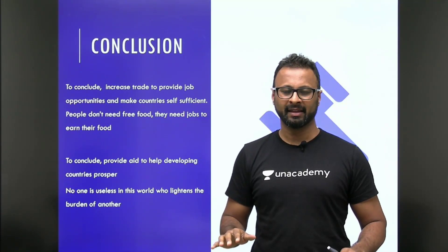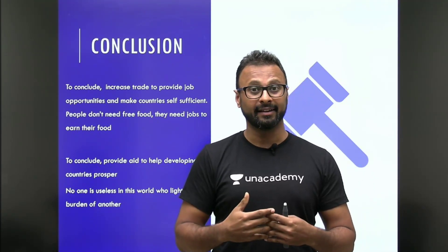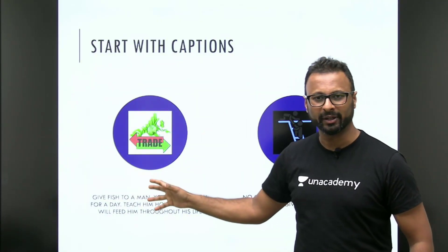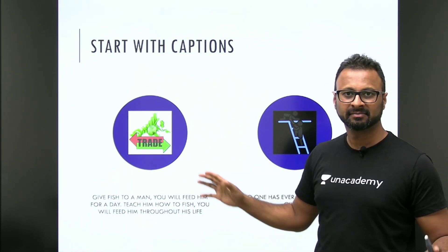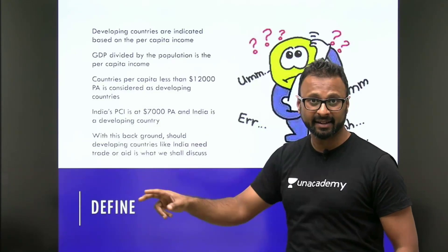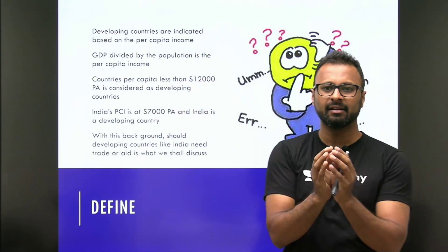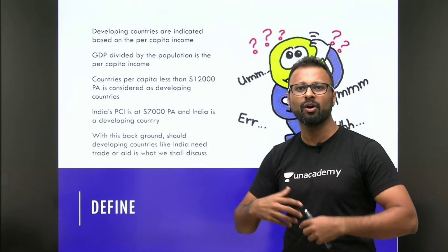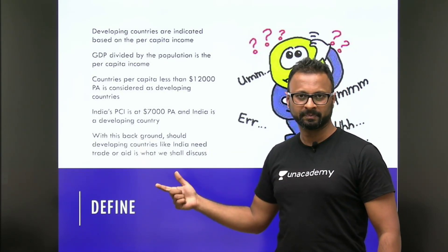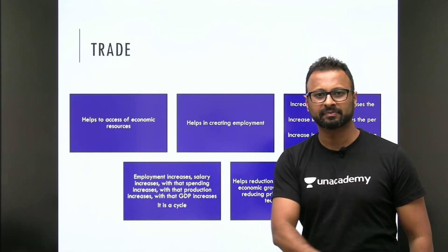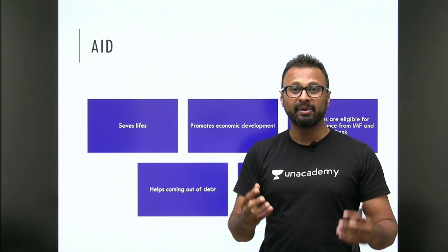Now, if I were to talk about aid, I would start this way: 'No one has ever become poor by giving.' Then I would define the topic — talk about GDP, PCI, what a developing country means, what an underdeveloped country means, and why India qualifies. After defining, I move on to the content.